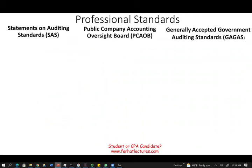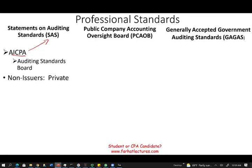First, we're going to look at professional standards. We have to comply with Statements on Auditing Standards, or SAS. Who issues those statements? The AICPA — and specifically under the AICPA, we have the Auditing Standards Board. When you are dealing with the AICPA and the SAS, you are dealing with non-issuers.